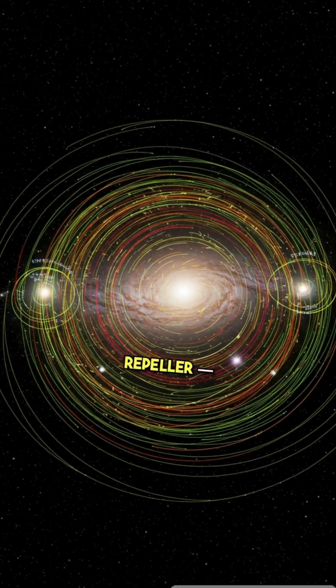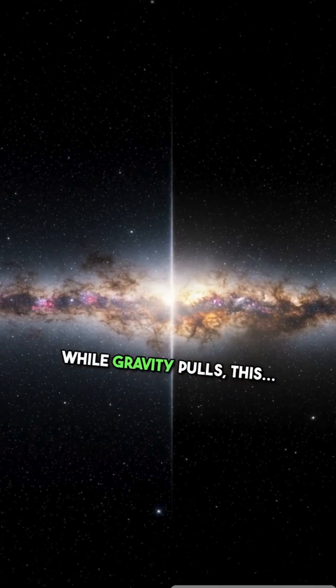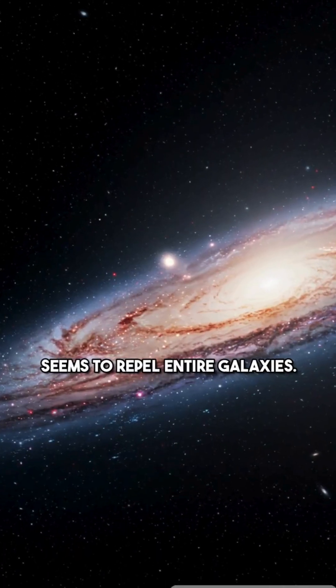It's called the Dipole Repeller, the opposite of the Great Attractor. While gravity pulls, this seems to repel entire galaxies.